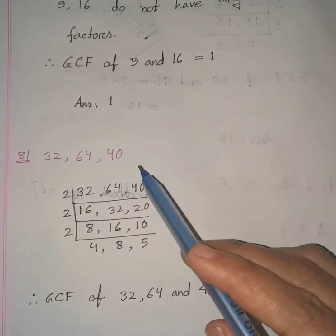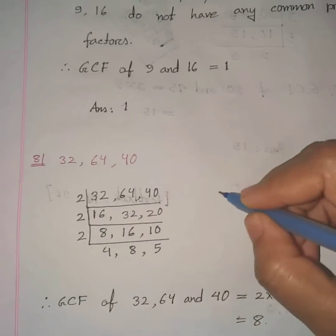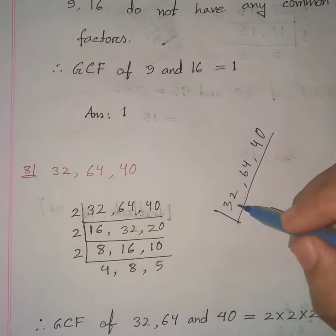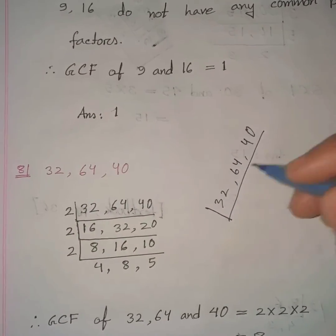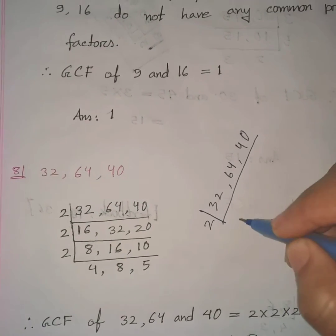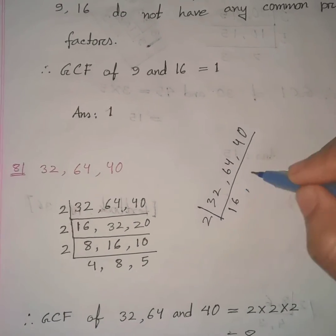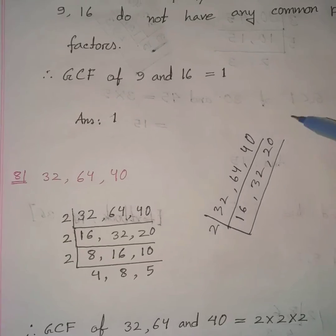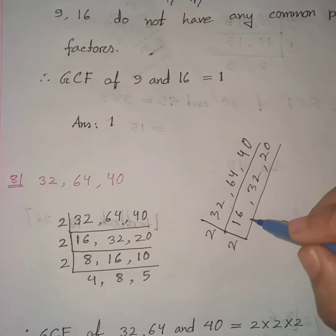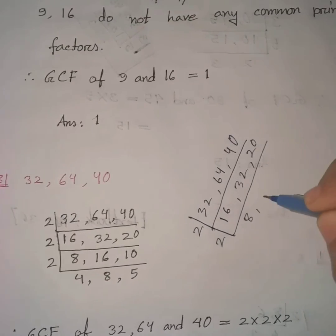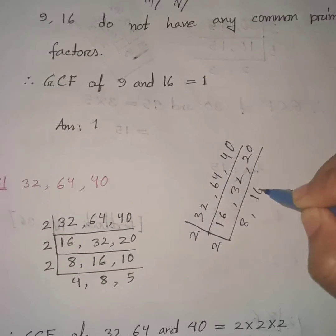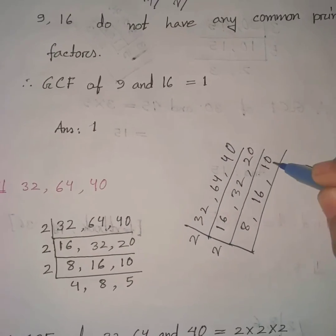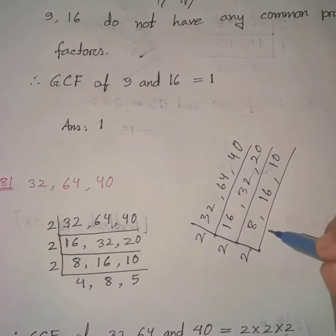Write 32, 64, and 40. All three numbers are even, so divide by 2: 32÷2=16, 64÷2=32, 40÷2=20. All numbers are still even, so divide by 2 again: 16÷2=8, 32÷2=16, 20÷2=10. All numbers are still even, so divide by 2 again.